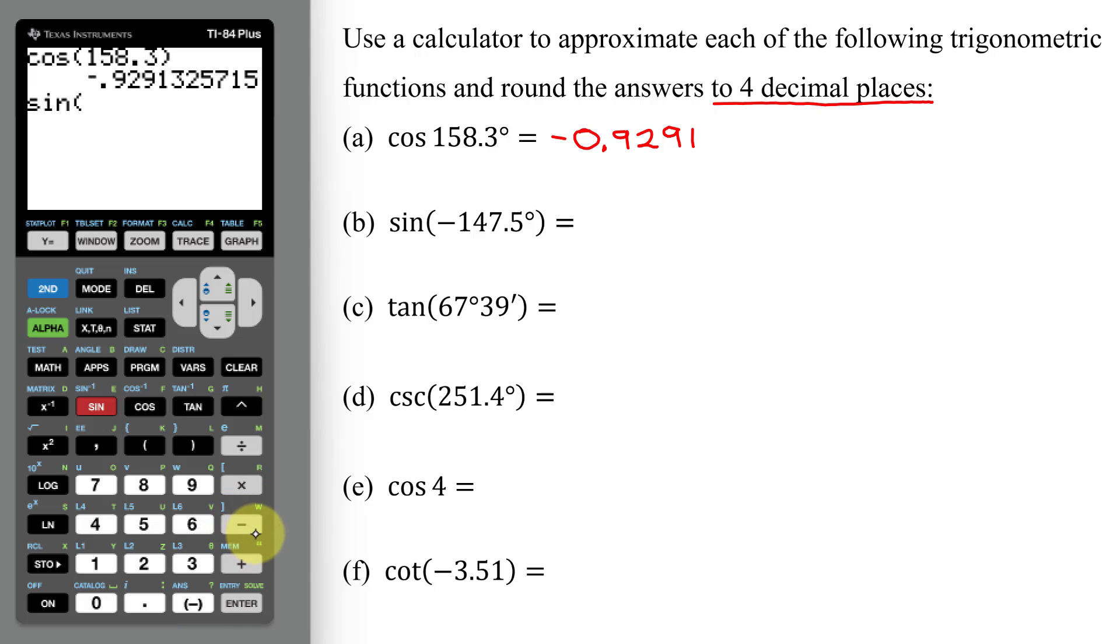If you use the subtraction key, you're going to get an error message. So use the negative key, 147.5, close parenthesis, hit enter. Rounding to the 4th decimal place, that's the 2. The 9 is going to round that up. So my answer is negative 0.5373.